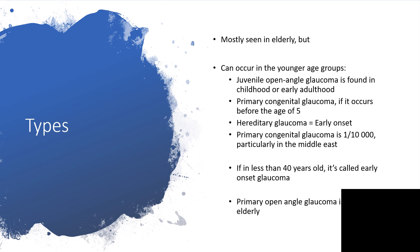It is mostly seen in the elderly but can occur in younger age groups. We have what is called juvenile open-angle glaucoma, found in childhood or early adulthood. We have primary congenital glaucoma, which occurs in children before the age of five. And we have hereditary glaucoma, which can present even earlier — at birth. Primary congenital glaucoma occurs in about one in every 10,000 births, particularly in the Middle East.